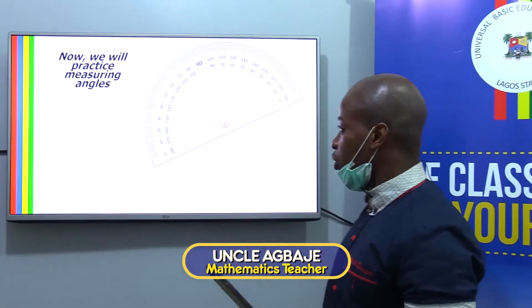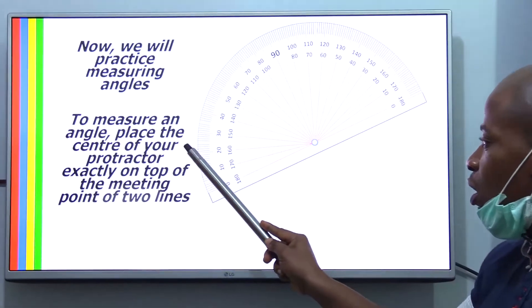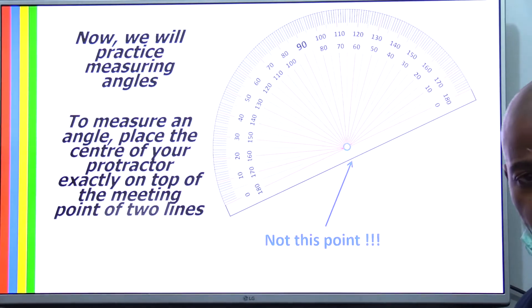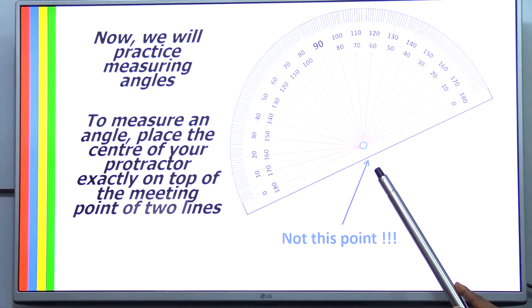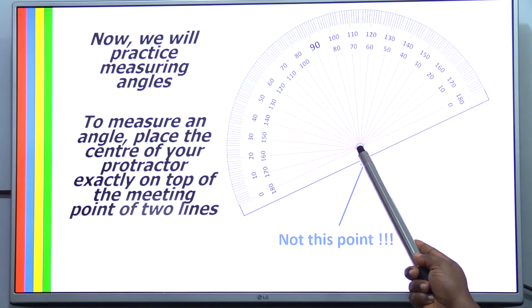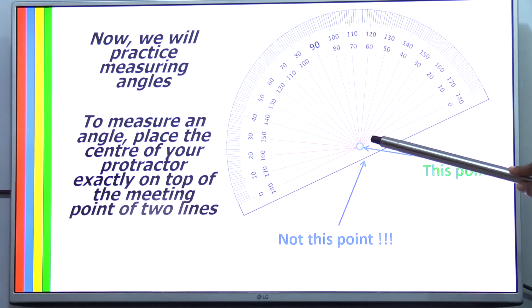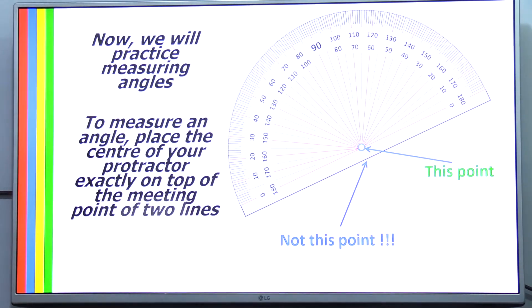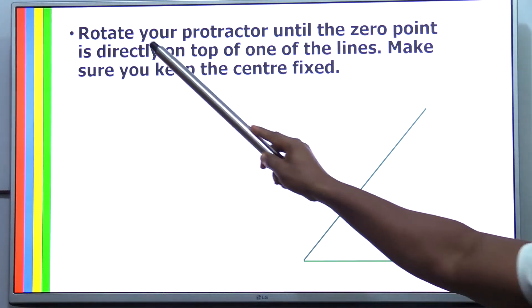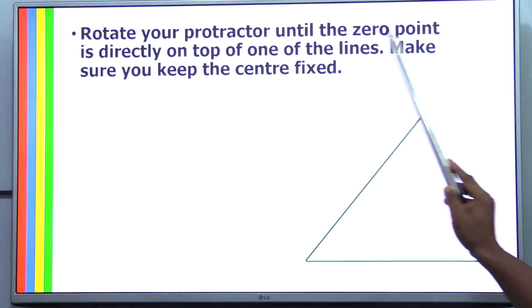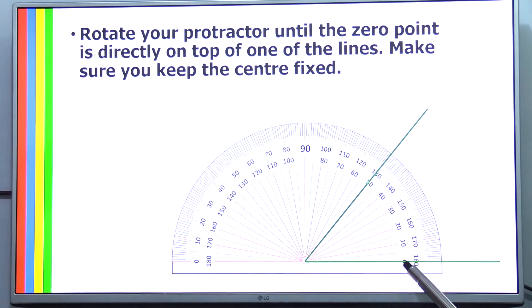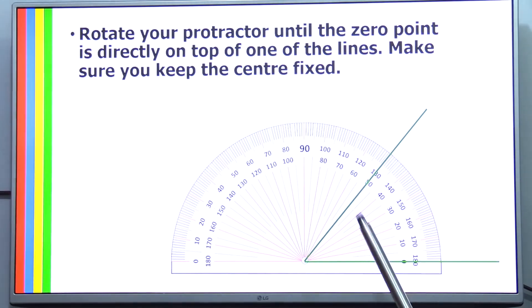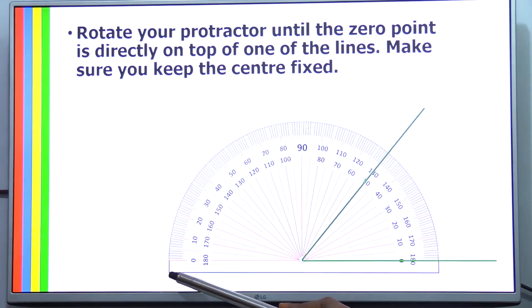Now we will practice measuring angles. To measure angles, you have to place the center of your protractor exactly on top of the meeting point of the two lines. When I say the center of your protractor, I'm not talking about this point — this is a common error that a lot of pupils make. Not this point, but this point. You will find a little hole in your protractor. This is where you want to put the center of your angle. Now, we're going to measure this angle. You're going to rotate the protractor until the zero point is directly on top of one of the lines. In this case, I want to use the zero for the anticlockwise graduation, so I will be using the inner scale and not the outer scale for this measurement.